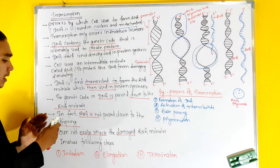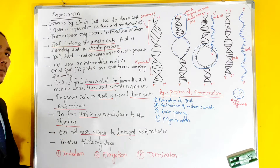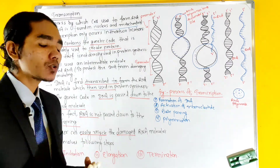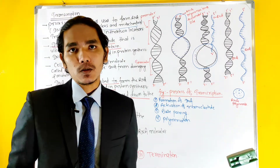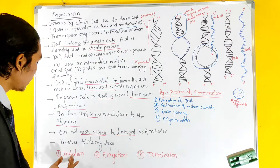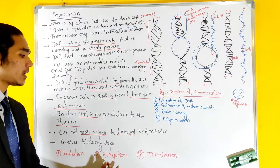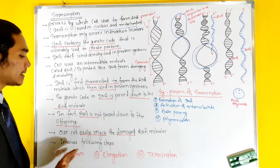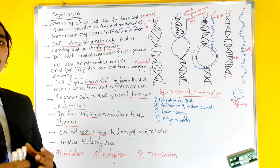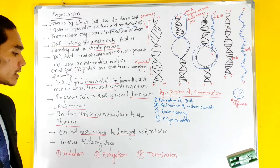We have a mechanism for how to start the process. First, initiation; then elongation; and finally termination. These are the three stages of the transcription process.